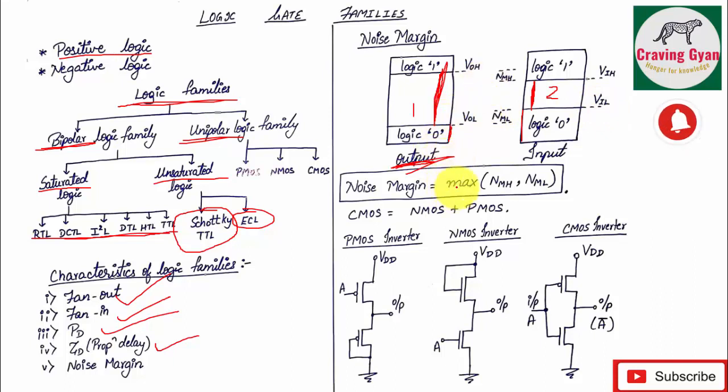Between these two — NMH and NML — whichever is maximum, that is the noise margin. Noise margin equals the maximum of NMH and NML.